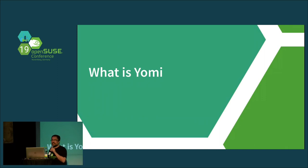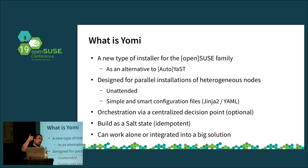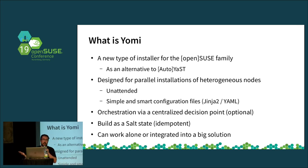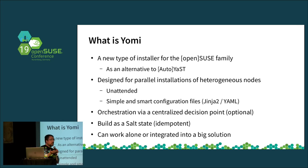So what is JOMI? It's a new type of installer. As of today, it is only focused on the openSUSE family: MicroOS, SLE, Tumbleweed, and of course Leap. It is designed for installations where you have a couple of heterogeneous nodes — nodes that have different CPUs, different memory configurations, different hard disks. When you have this kind of problem, JOMI is a good match. In that regard, it is an alternative to AutoYaST.